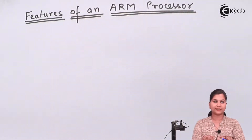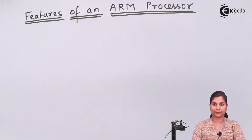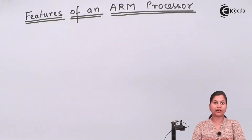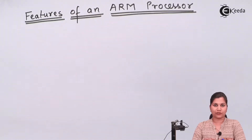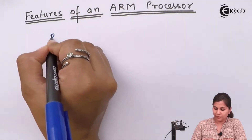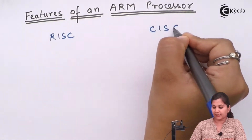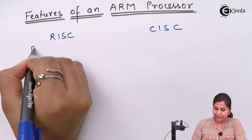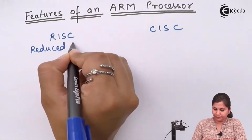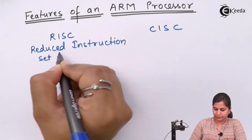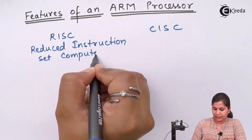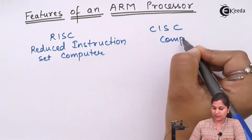So let us first understand what an ARM processor is. An ARM processor is one of a family of CPUs which is based on the RISC architecture. The CPU present in computers can be based on two types of architecture: RISC architecture and CISC architecture. The full form of RISC is Reduced Instruction Set Computer, and the full form of CISC is Complex Instruction Set Computer.